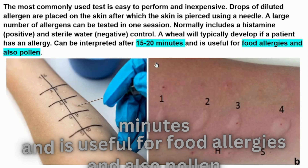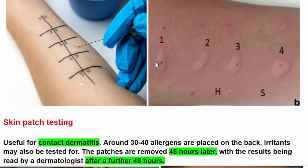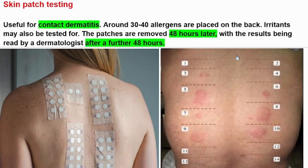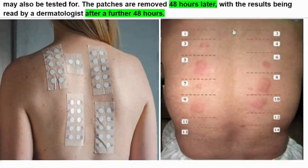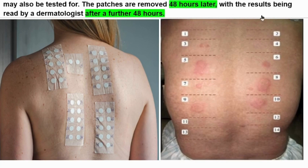Skin prick testing is useful for food allergies and also pollen. Here we can see skin prick testing and a positive result. Skin patch testing is useful for contact dermatitis, and around 30 to 40 allergens are placed on the back. Irritants may also be tested. The patches are removed 48 hours later.